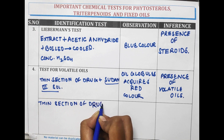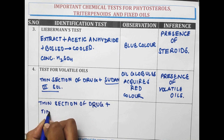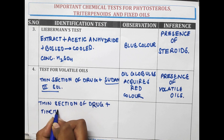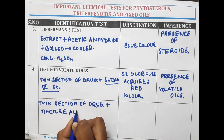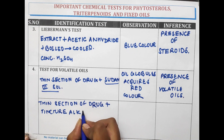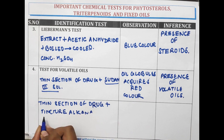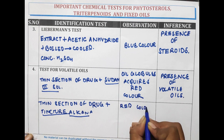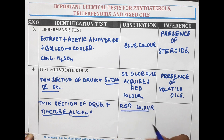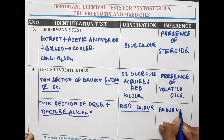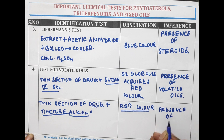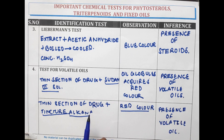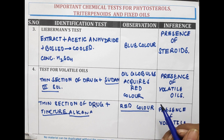Another test for volatile oil: a thin section of drug is taken and Tincture Alcana is added. A red colour is seen, which indicates the presence of volatile oil.